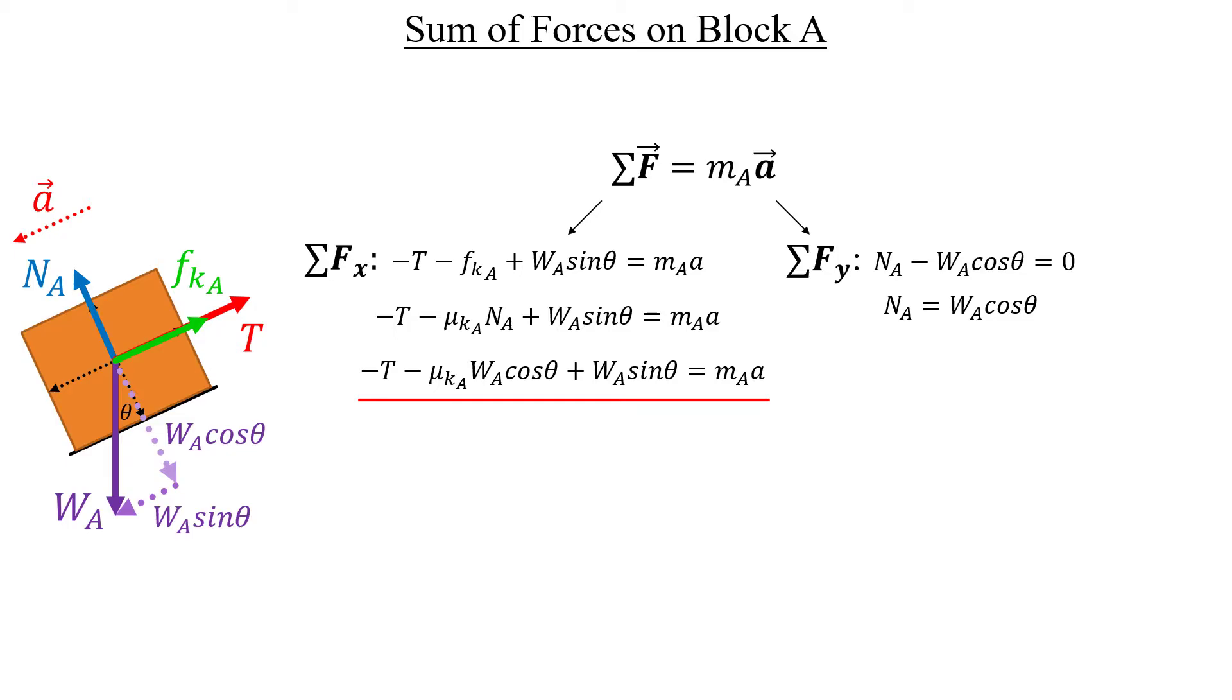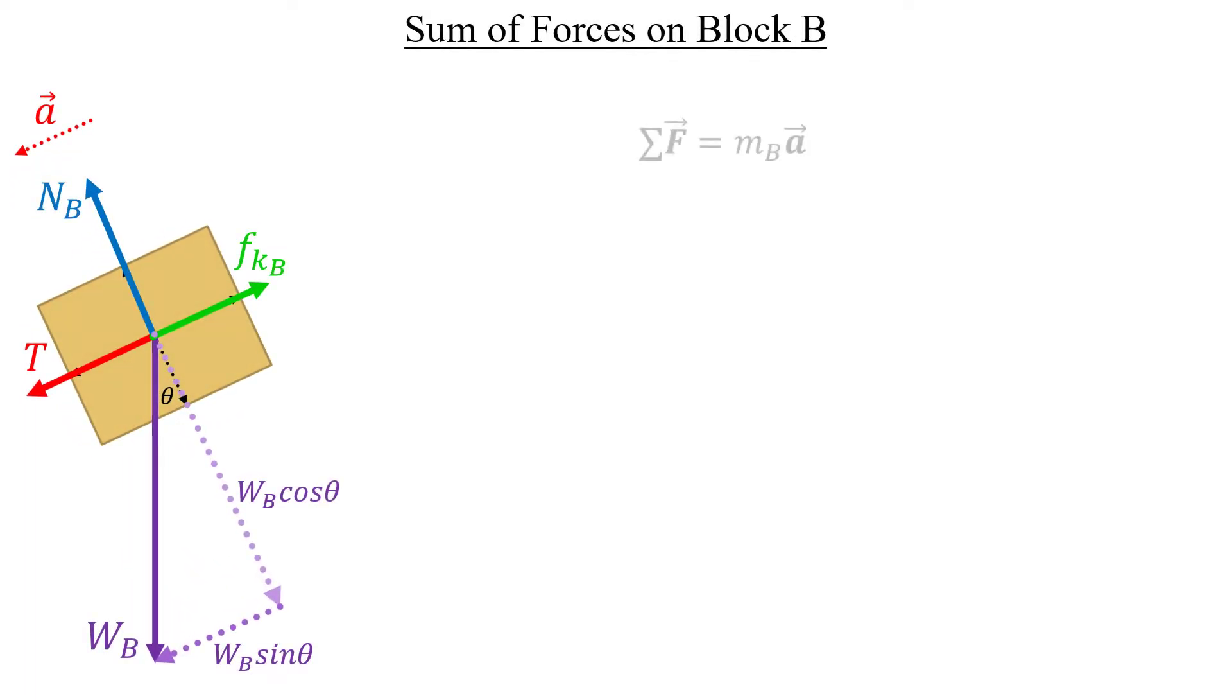The story for block B is going to be almost exactly the same. Same vector expression to start at the top, and we'll begin with the x portion. And the expression is only different in the tension, because for block A, the tension was pointing in the negative direction. Well, for block B, it's now pointing in the positive. But everything else is the same. So like we did before, let's exchange the frictional force with the definition. Mu sub k, specifically for block B, multiplied by the normal force of the ramp acting on block B.